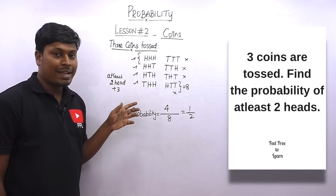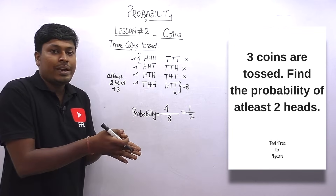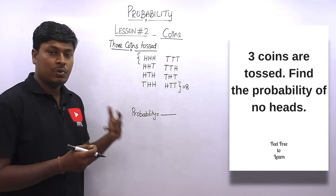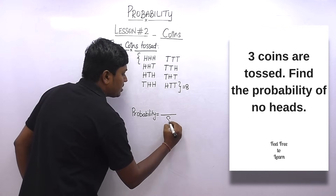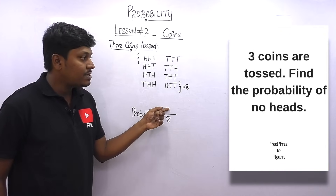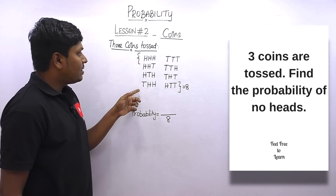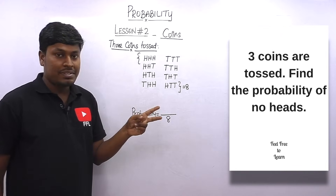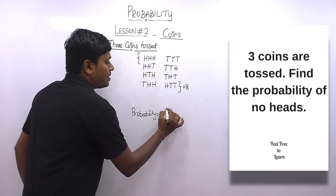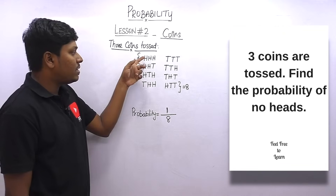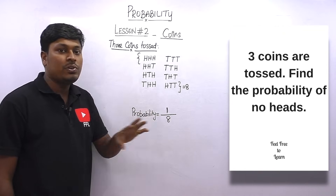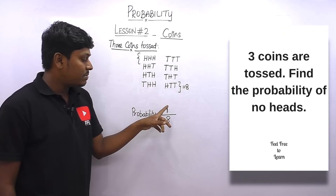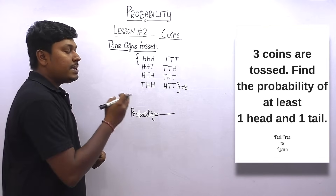The meaning of 'at least' is minimum to maximum. Question 7: Three coins are tossed — find the probability of no heads. Only one outcome has all three tails (no heads at all). So probability = 1/8.